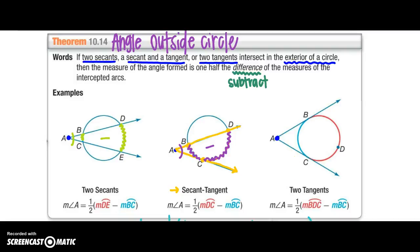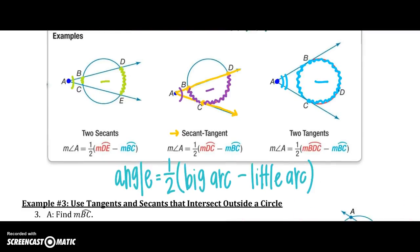Or I might have two tangents intersecting the circle at one point each. So angle A is going to equal my big arc BDC minus BC. So one way that I like to remember it is my angle that is outside equals one half the big arc minus my little arc.